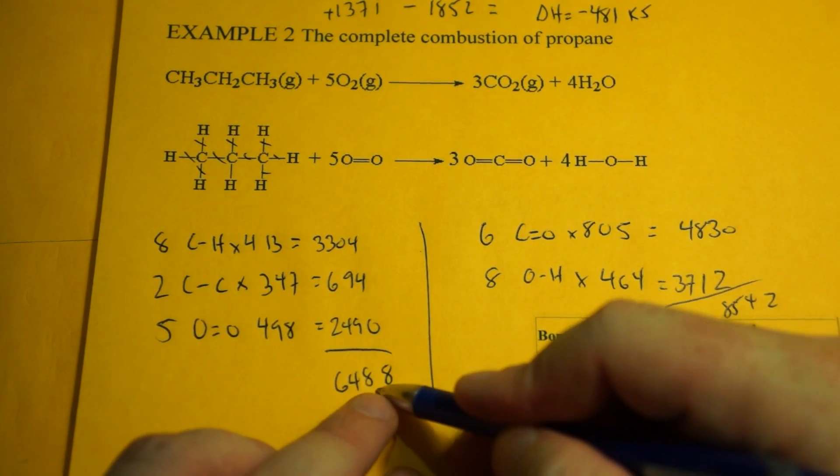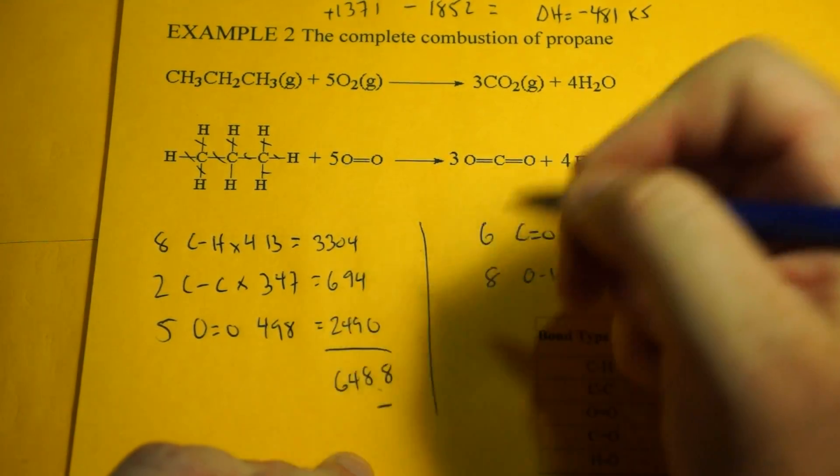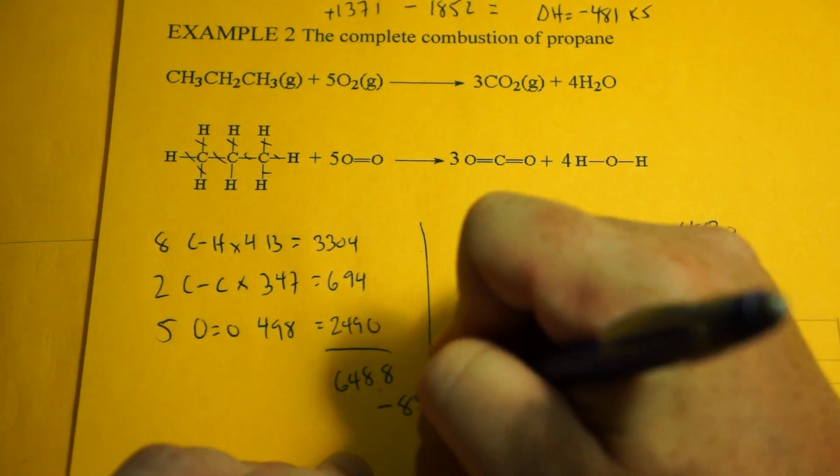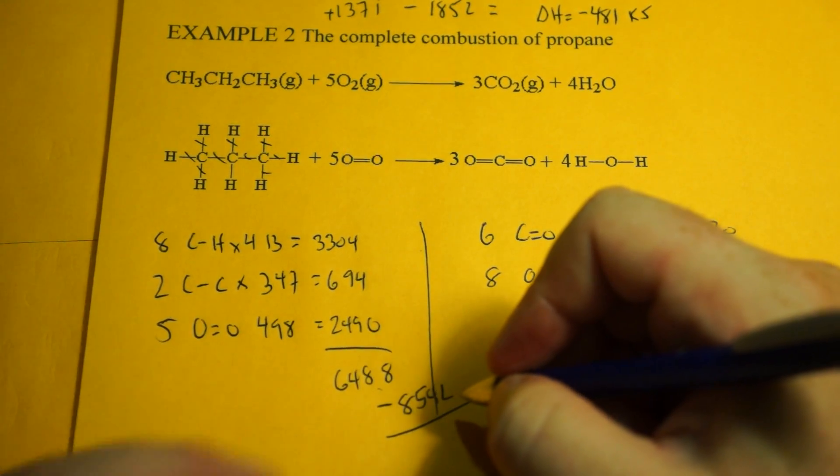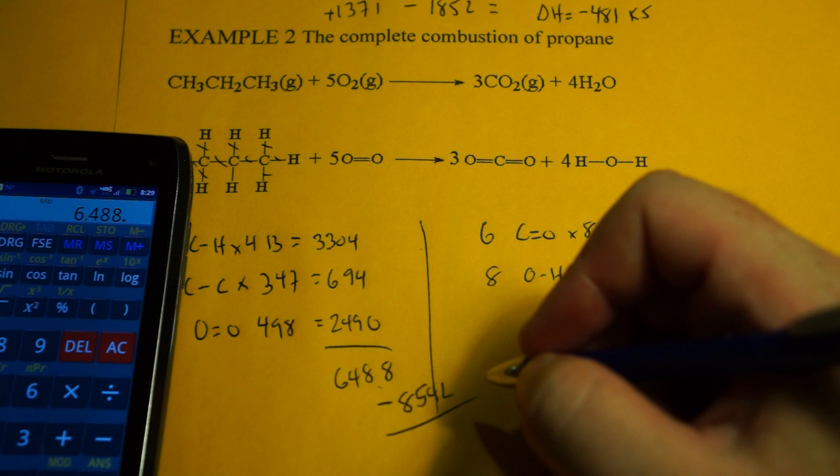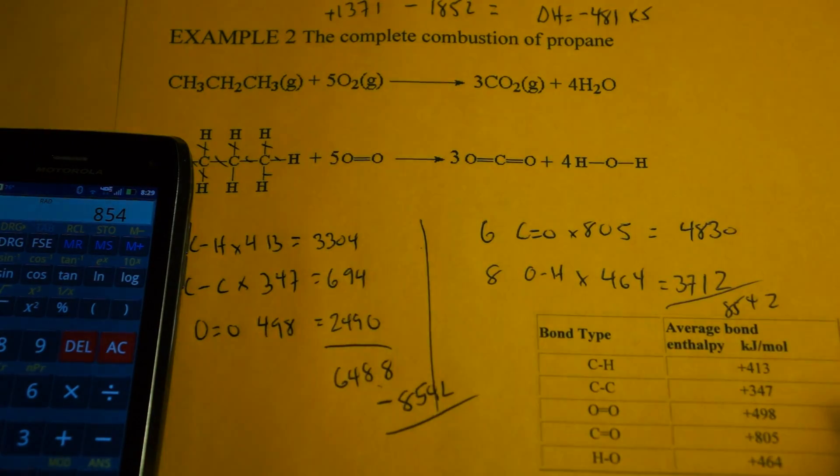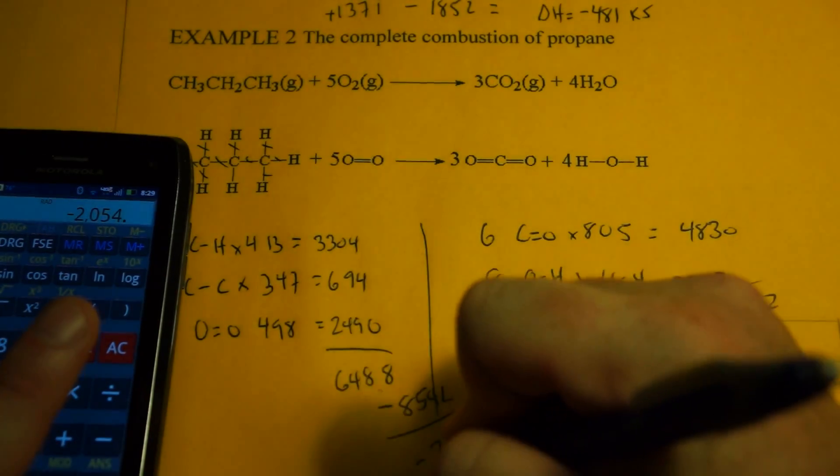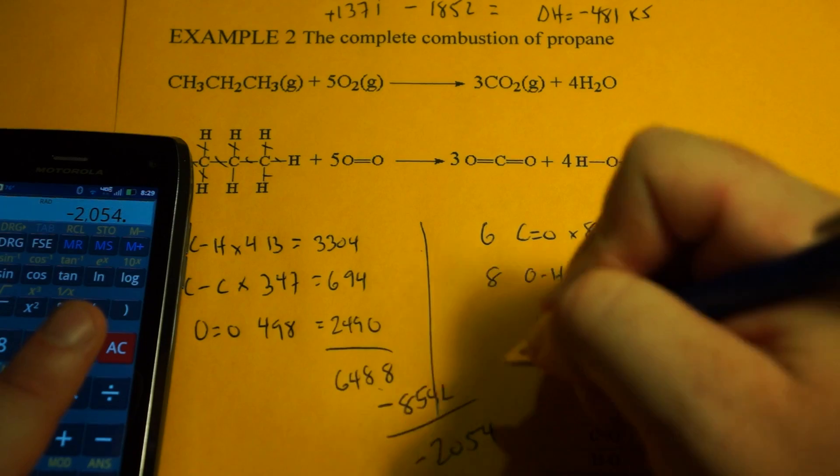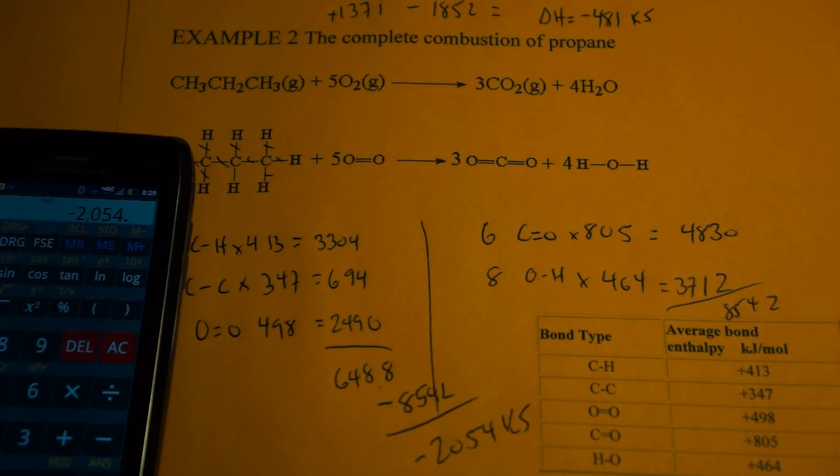Now all we have to do is broken minus formed. So 6,488 minus 8,542, and we get negative 2,054. And that's kilojoules. And that's how you use enthalpy to find bond energy.